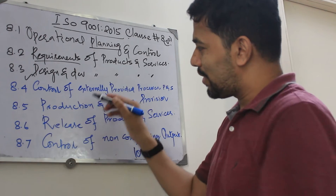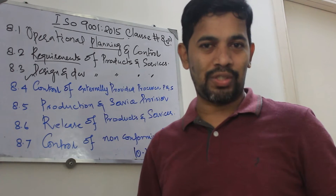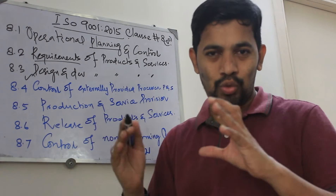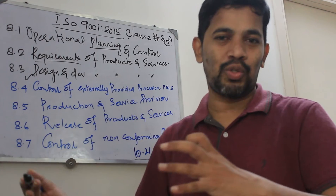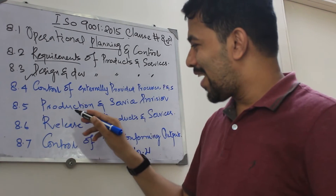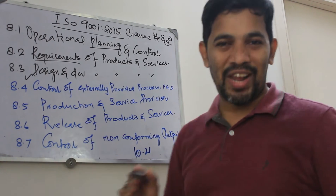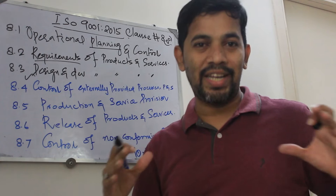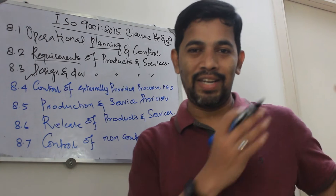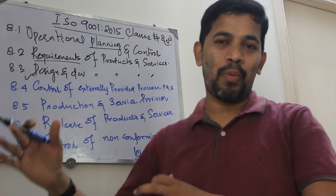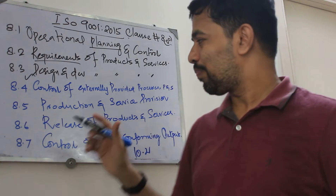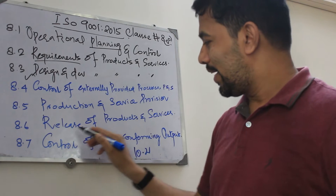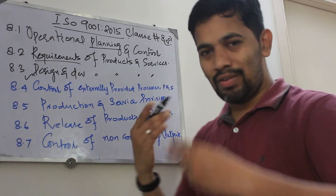When your product is all set, you will create that process. After that you have production and service provisions — you will make it happen, right, in your production area or your service provision. And then release of product.